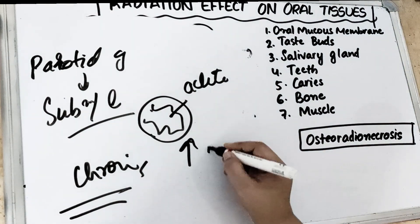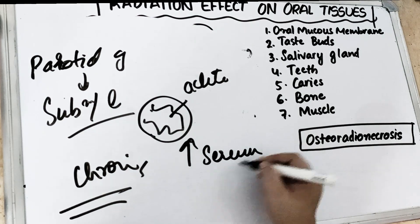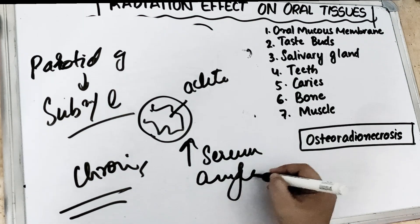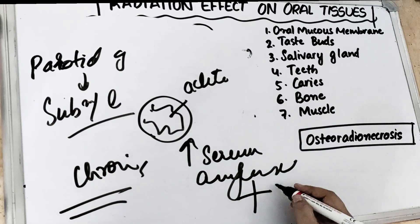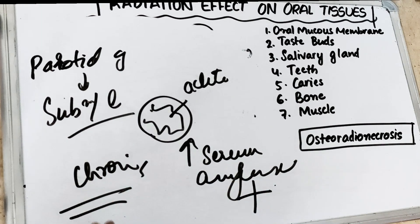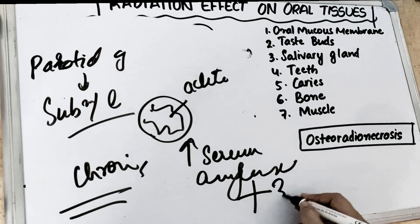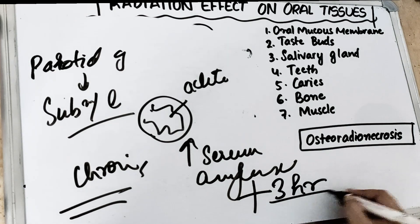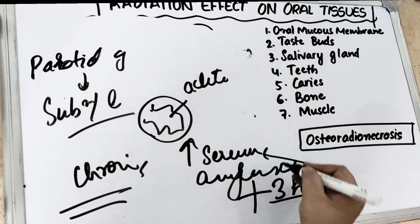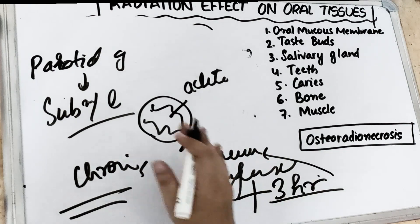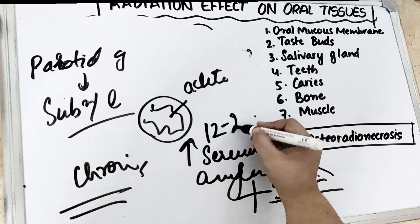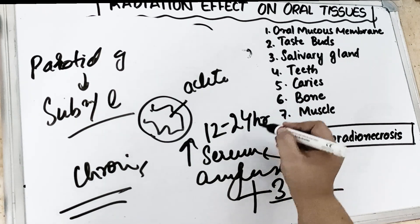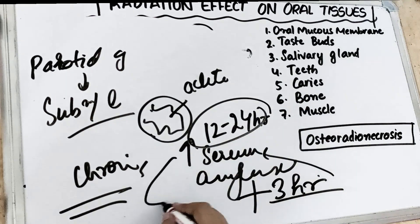There is also an increase in serum amylase. After three hours of radiation therapy, there will be an increase in salivary amylase. Maximum salivary amylase is seen at 12 to 24 hours — within the first day. After that it starts decreasing, and it returns to normal after 96 hours.